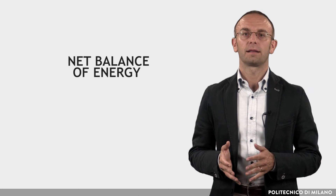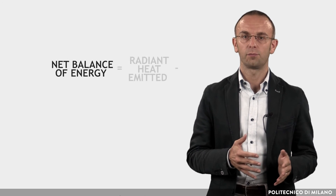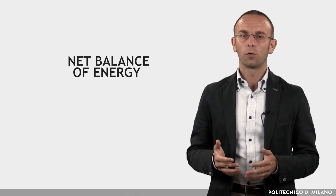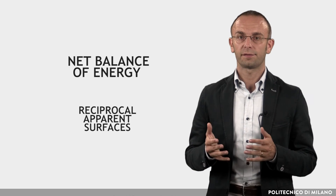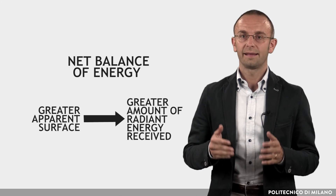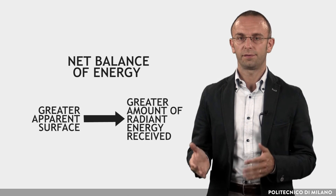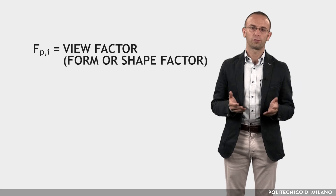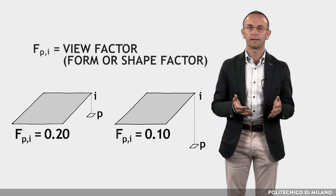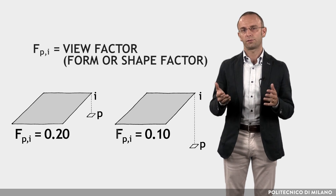An object not only emits but also receives radiant heat, being surrounded by other bodies. What matters is the net balance of energy, which is the difference between the radiant heat emitted and the radiant heat received. This balance depends also on the positions of the bodies, which determine the reciprocal apparent surfaces. The greater the apparent surface, the greater the amount of radiant energy the body receives. To quantify the phenomenon, the view factor Fpi, also called form or shape factor, is used, indicating the proportion of the radiation which leaves a person P that strikes a surface I.